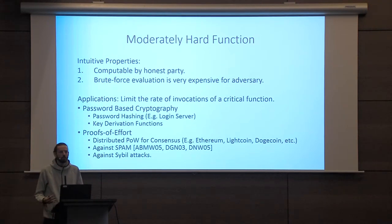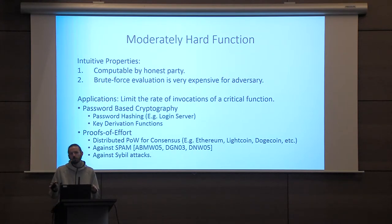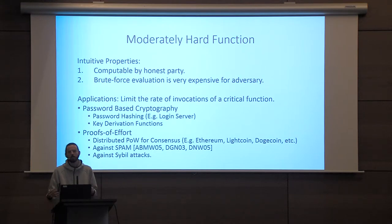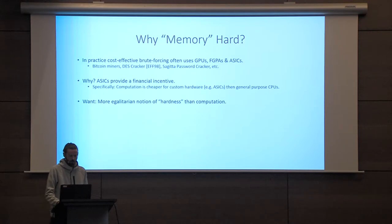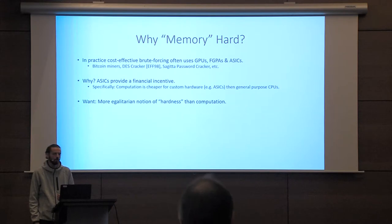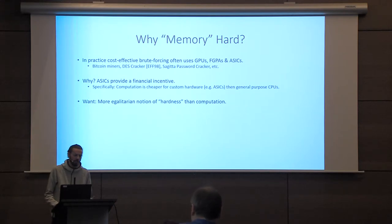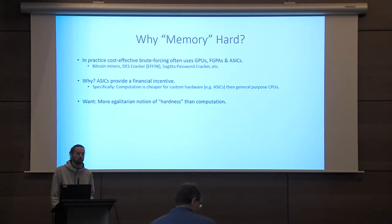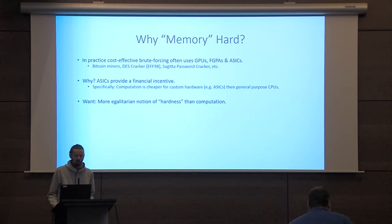So these are all examples where there's some critical function and you try to limit the rate that an adversary can evaluate these functions — or cause these functions to be evaluated, in the case of combating spam. So why would you want memory hardness? In order for this notion of moderate hardness to make sense, it's instructive to look at what happens in practice when people try to brute force evaluate these critical functions.